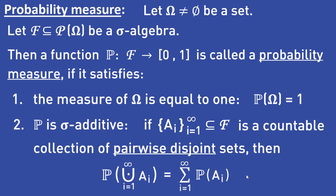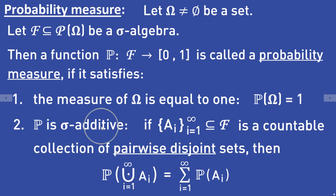We use the union symbol with a dot in the middle to denote a disjoint union of some sets. So a probability measure is a function P from the sigma algebra F to the closed interval zero one, such that P is sigma additive and P of omega is equal to one.